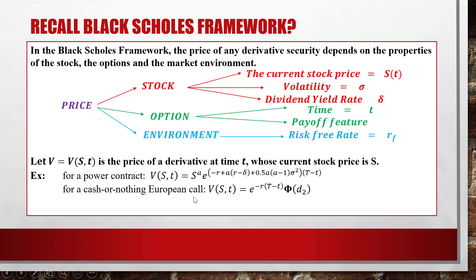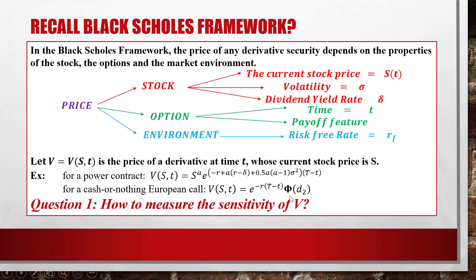For a cash-or-nothing European call, V(S,t) equals e to the minus r times (capital T minus little t), times Phi(D2). Here capital Phi represents the CDF of the standard normal distribution. In this lesson you'll see three different phi symbols: capital Phi for the CDF, lowercase phi for the PDF, and another phi that represents the Sharpe ratio.